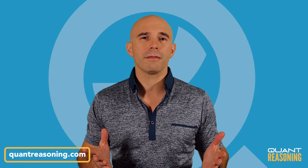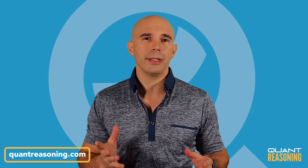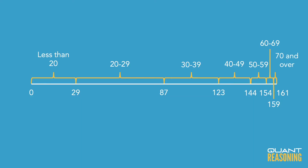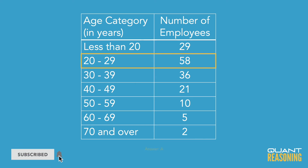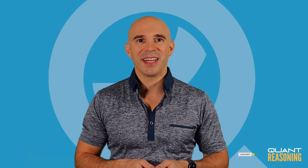I'm 100% confident that the second row represents the age group that would be in the middle if we sorted all of the employees by their age groups. That means the median employee in this company would belong to the age group between 20 and 29. And that's the answer.